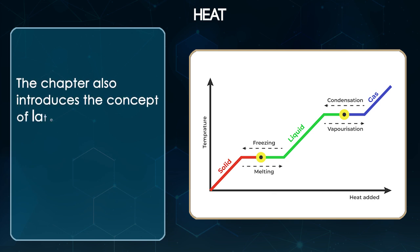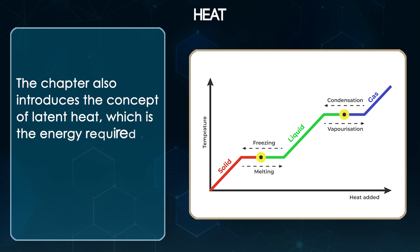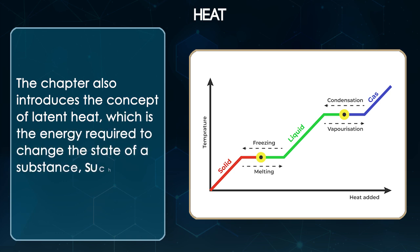The chapter also introduces the concept of latent heat, which is the energy required to change the state of a substance such as melting or vaporization.